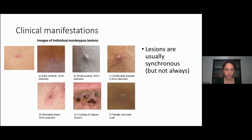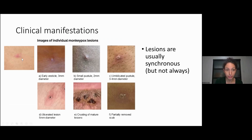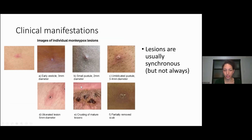This is from the UK. They gave the different phases. When it first starts it can look like nothing at all — like a mosquito bite or a pimple — and then it slowly progresses through all these phases. So we see vesicle, pustule, umbilicated pustule, ulcer, crusting, and eventually healing.